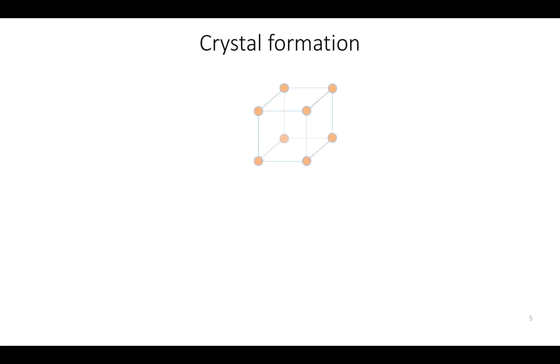As we see, semiconductor characteristics mainly depend on their crystal structure. Single crystal materials can be represented as three-dimensional repetitions of certain atom groups at regular intervals. The periodic arrangement of atoms in a crystal is called the lattice, and the atom group is called the unit cell. In other words, the unit cell is a small volume of the crystal that can be used to reproduce the entire crystal by copying it in three dimensions.